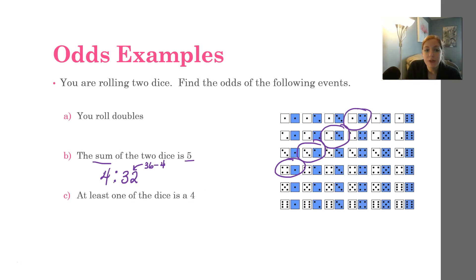Okay, now this can be reduced, 4 and 32. Both of these are divisible by 4. Okay, so we're just going to divide each of these by 4. 4 divided by 4 is 1, and 32 divided by 4 is 8. So 1 in 8, for every 1 roll that is a 5, there's 8 rolls that are not 5.